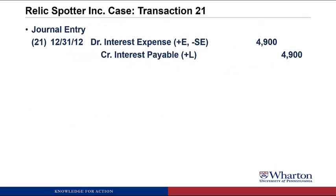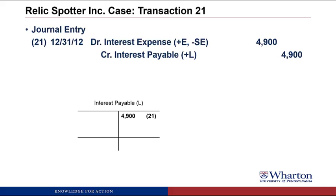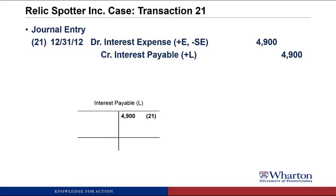We post this to T-accounts. We create an interest payable liability, which goes on the balance sheet to show we have an obligation to pay interest in the future. And we create an interest expense account to recognize that one of the costs of doing business this period was incurring interest costs.